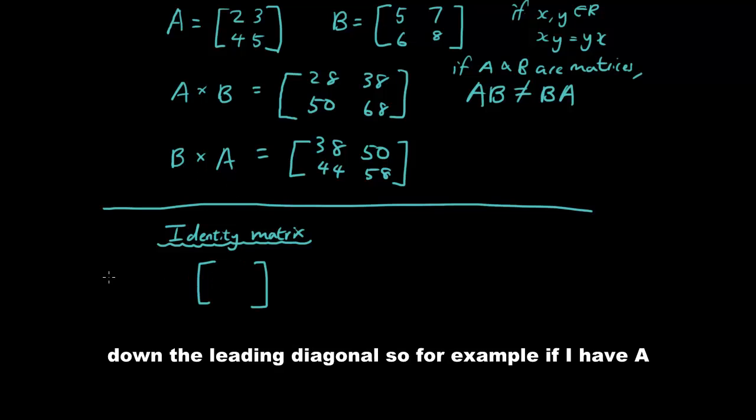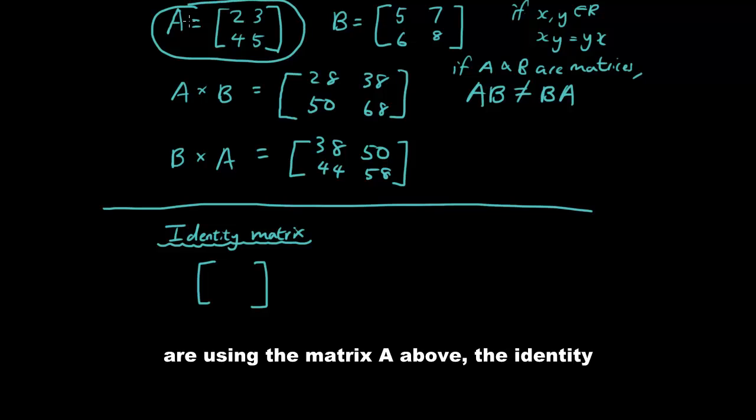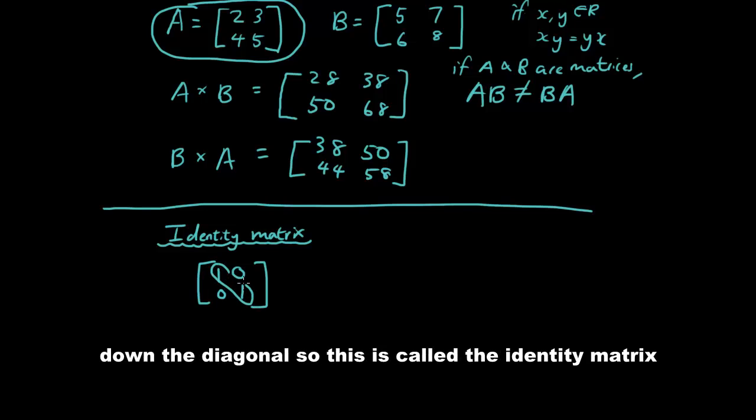So for example, if I had A, using the matrix A above, the identity matrix A would be 1, 1, 0, 0, 0 where it has the number 1 down the diagonal. So this is called the identity matrix.